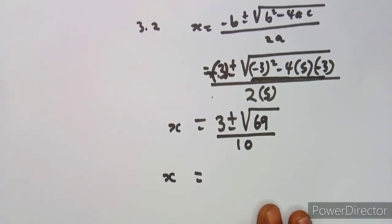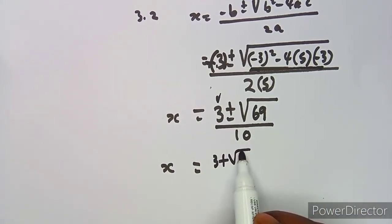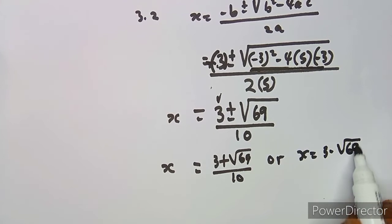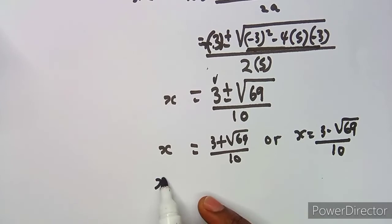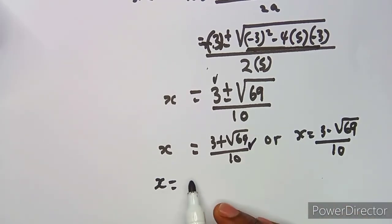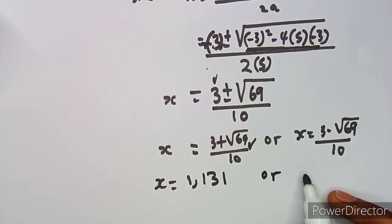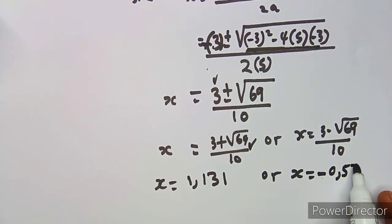Separating the two solutions: x = (3 + √69) / 10 gives approximately 1.131, and x = (3 − √69) / 10 gives approximately −0.531. Both answers are given to three decimal places.